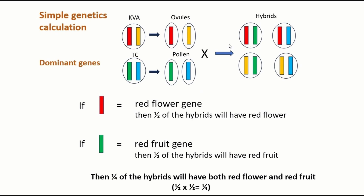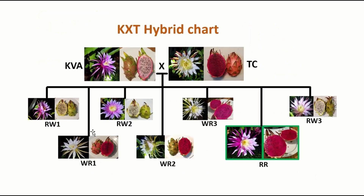But if you want both red flower and red fruit phenotype, you can see it's only 1 out of 4 hybrids that have this phenotype. The possibility of this double feature can be calculated by multiplying: 1/2 times 1/2 equals 1/4, which is the double feature. One hybrid out of 4 will have both red flower and red fruit phenotype, which can also be seen from these seven hybrids.